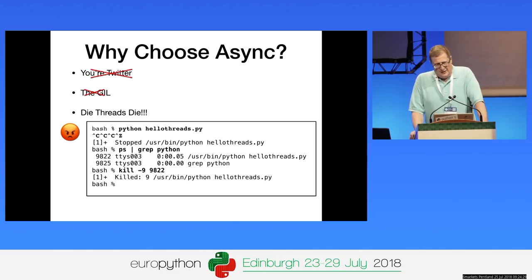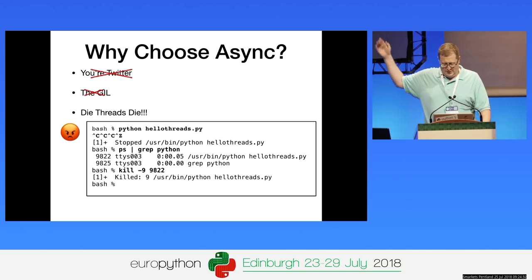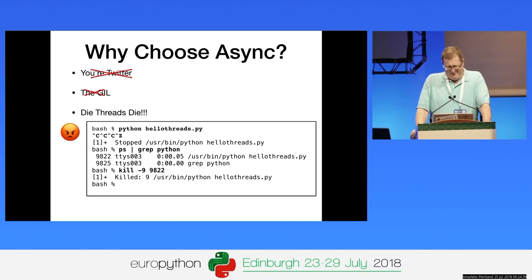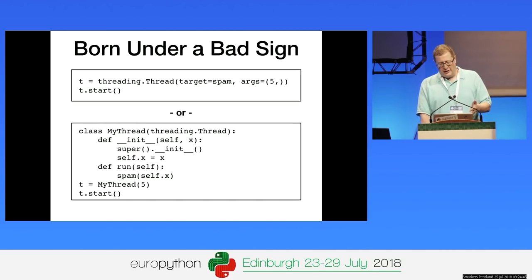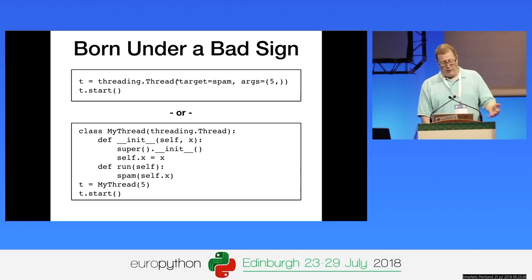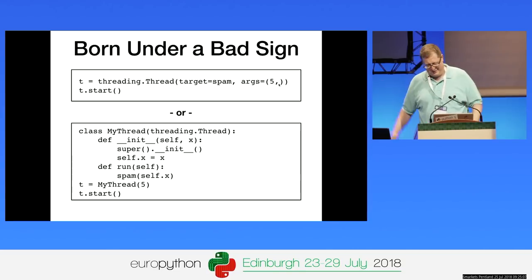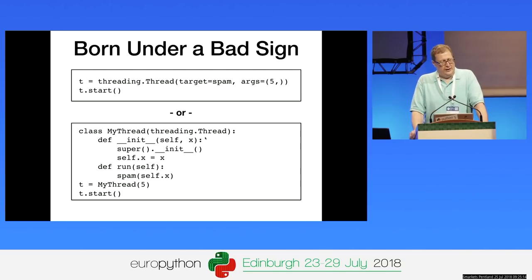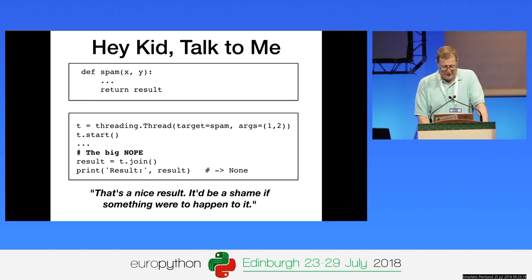So now we're getting into the German part of the talk — die threads die. This is a common experience with threads. It's not just this though. Even creating a thread is kind of annoying. I often teach people in classes this is how you create a thread, and they focus on like the one-tuple and the comma at the end, asking why is it 'five comma'? Or the only way to create a thread is to use everybody's favorite feature, which is inheritance — obviously.